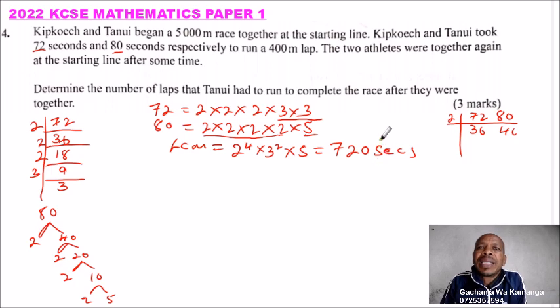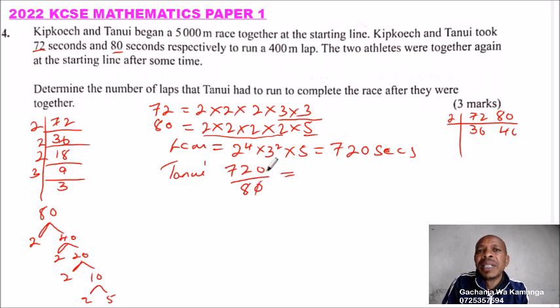When you get that, so you'll find out, this is the time they'll be together. How many laps had Tanui covered after 720 seconds? So for Tanui, we divide 720, and he was covering a lap in 80 seconds. So when you divide that, you'll be able to get this is 9 laps. So by the time they were together, then Tanui had 9 laps.